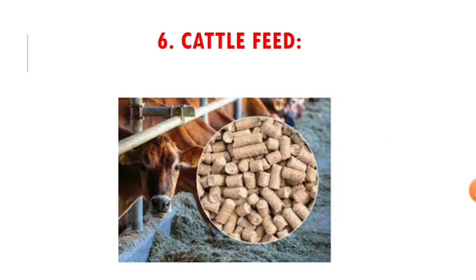The next important source is cattle feed. Cattle feed may be given in different forms such as green fodder, fodder cakes, cotton seeds, and silage. Each of these forms may carry a number of microorganisms, so cattle feed should be cleaned from microorganisms before use.